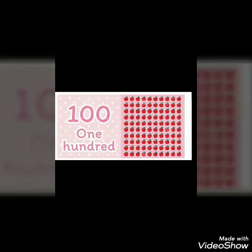1, 0, 0 — 100. 100 number and 100 number name: O, N, E — 1, 0, 0 — H, U, N, D, R, E, D — 100.